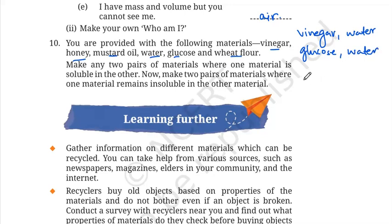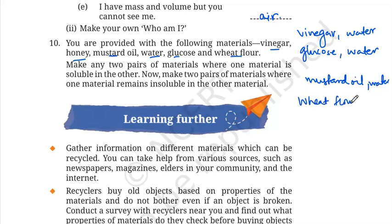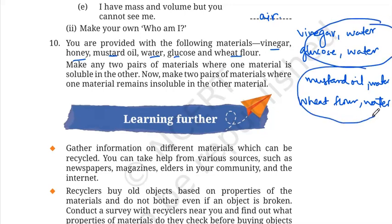For insoluble pairs: mustard oil and water are insoluble. Wheat flour and water are also insoluble. So two pairs that are soluble and two pairs that are insoluble.